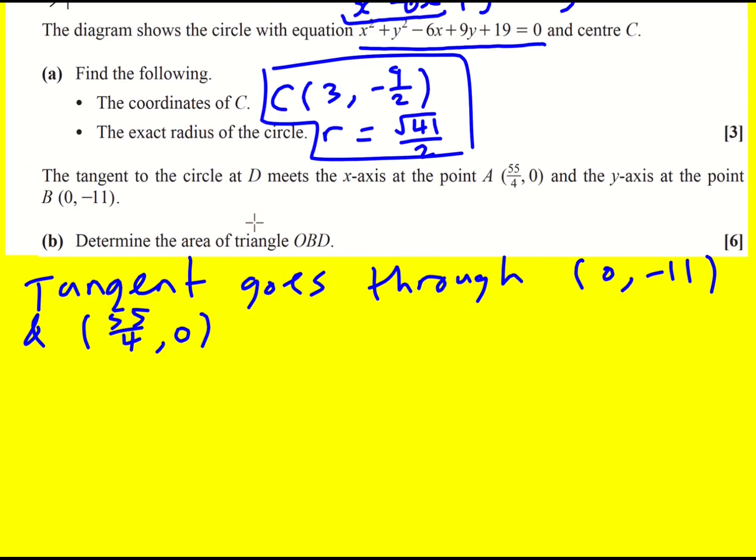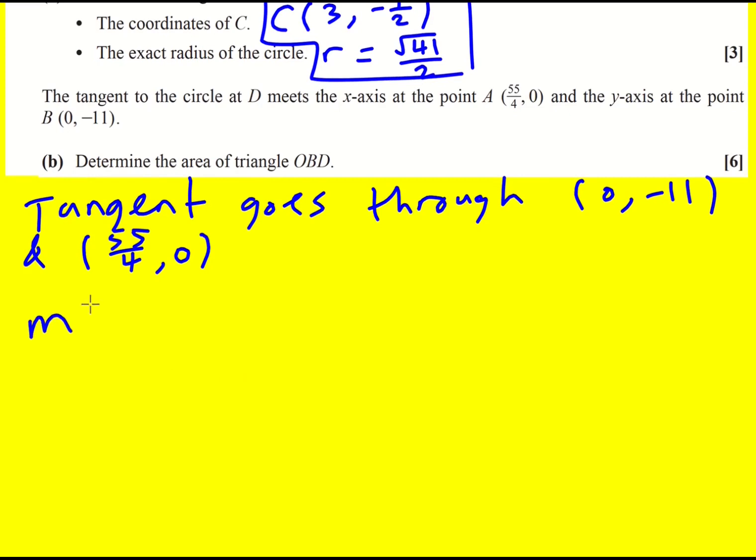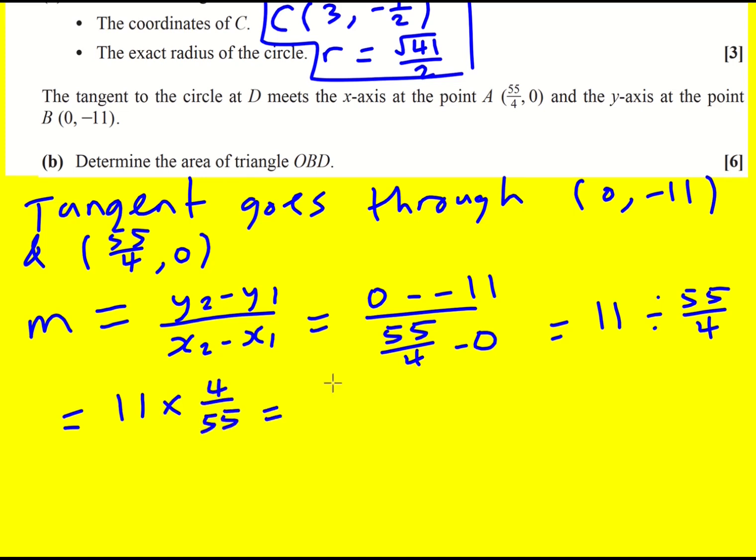So let's find the equation of the tangent. The tangent goes through 0, minus 11 and 55 over 4, 0. Well, the gradient is going to be y2 minus y1 over x2 minus x1. So 0 minus minus 11 over 55 over 4 minus 0, which is actually 11 divided by 55 over 4, or 11 times 4 over 55. 44 over 55, or 4 over 5. Of course you can do that with a calculator, but it's quite nice to be able to do it without.